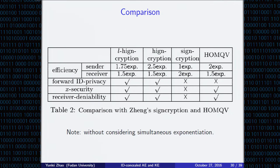Here is a brief comparison. For the standard adversary model, light HICE is even more efficient than HMQV. For a receiver adversary model, both HICE and HMQV are better than signcryption. HICE achieves forward ID privacy, KCI security, and receiver deniability simultaneously. HMQV does not consider ID privacy, while signcryption achieves none of these properties.